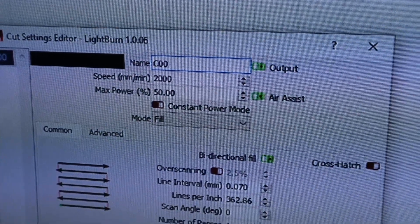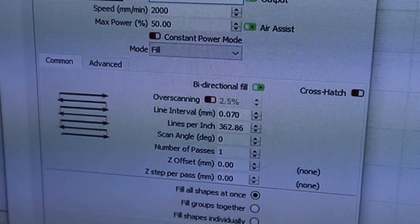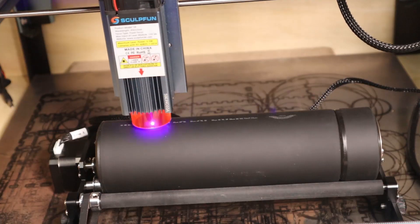I used a speed of 2000 millimeters per minute and 50 percent power. Fill step was set at 0.07 millimeters.